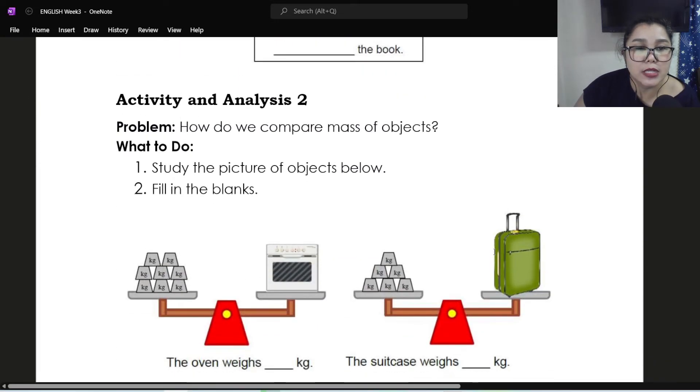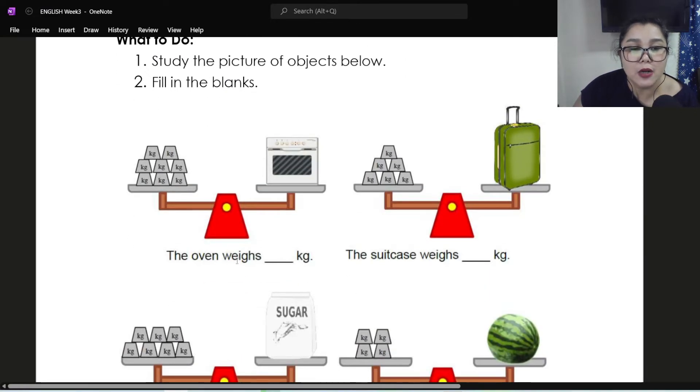Let's now proceed with activity and analysis two. The problem that we need to solve for this activity is, how do we compare mass of objects? So what to do? Study the picture of objects below and fill in the blanks. So we have here, oven weighs blank kilogram. All you have to do is count these shapes with kg. It means kilogram. So one of this, it means one kilogram. So just count. So that will be the equivalent weight or mass of the oven.